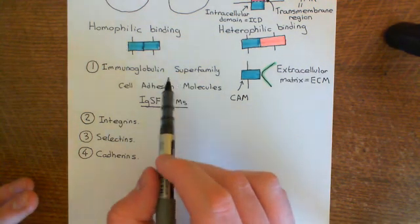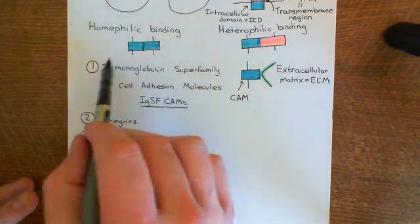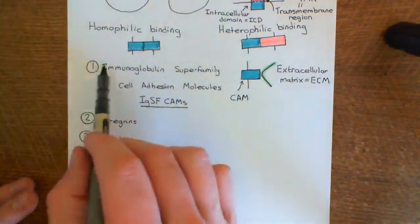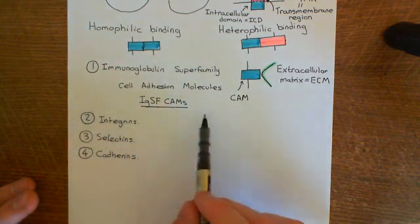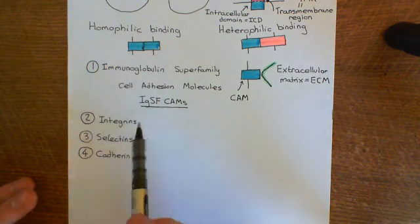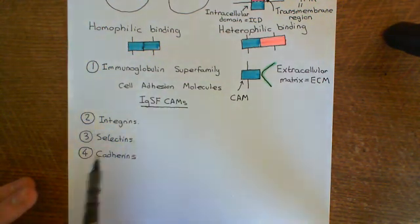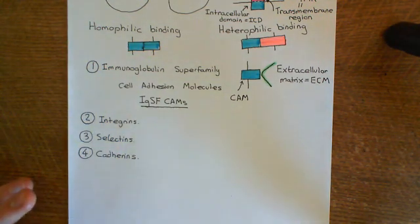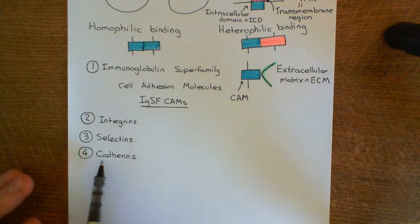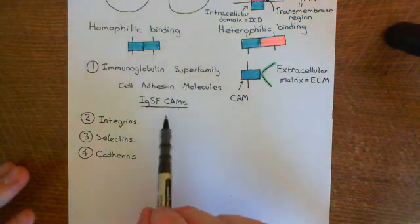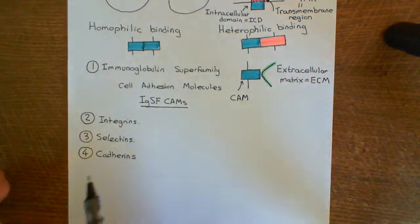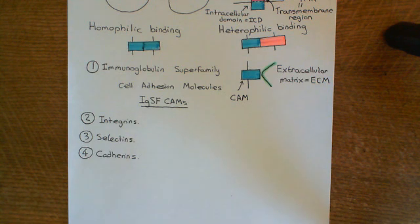In this video we'll continue looking at the immunoglobulin superfamily cell adhesion molecules. Then in upcoming videos we'll look at the integrins and selectins, but we'll ignore the cadherins. Each of these four families has a huge number of members within it, which are all cell adhesion molecules.